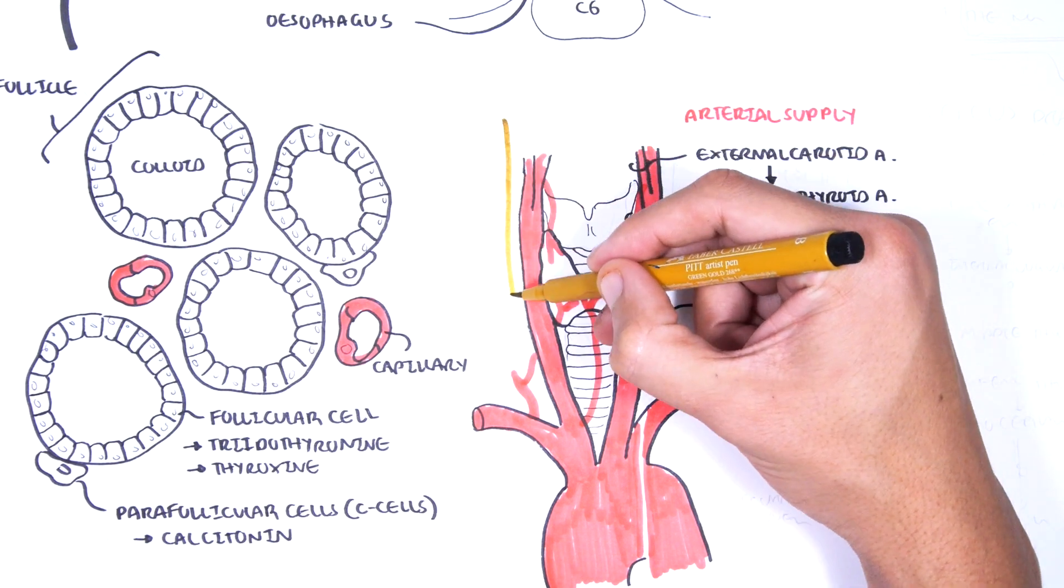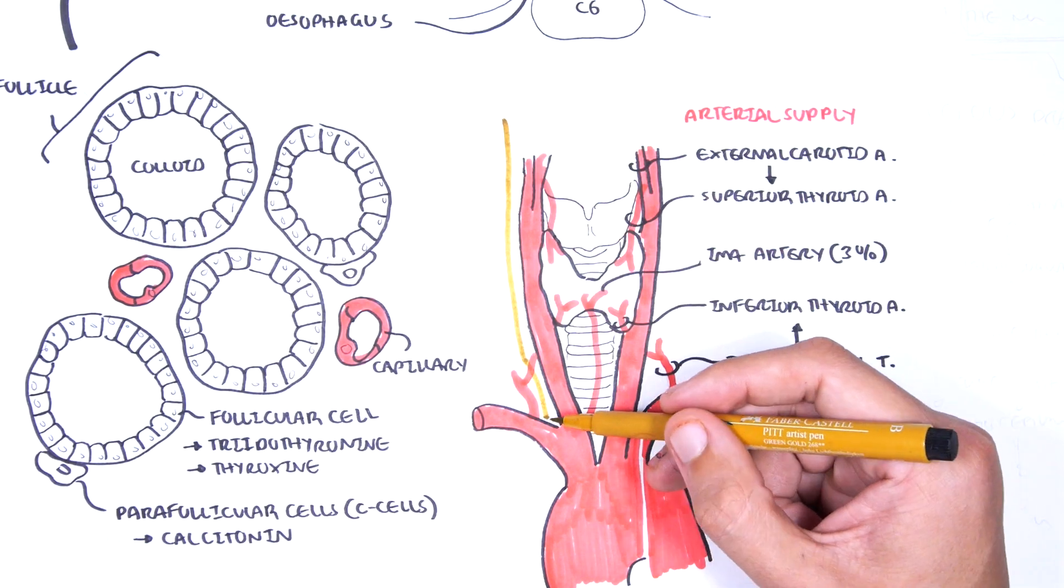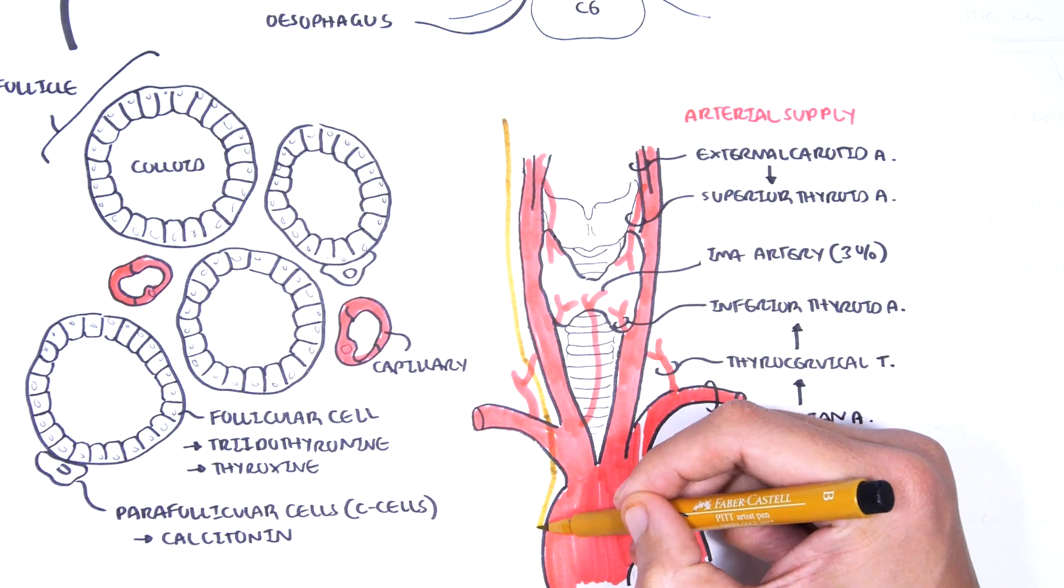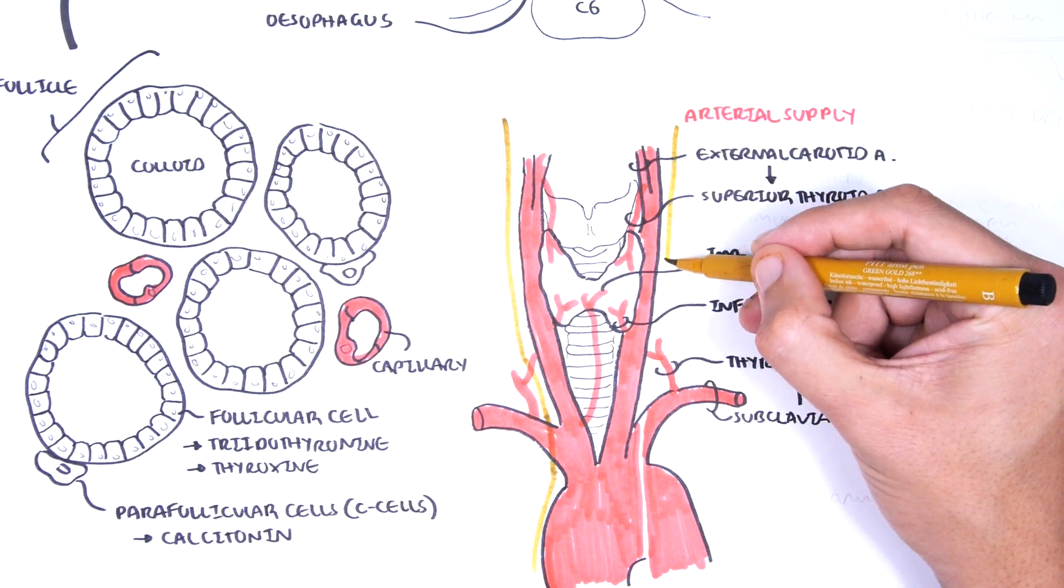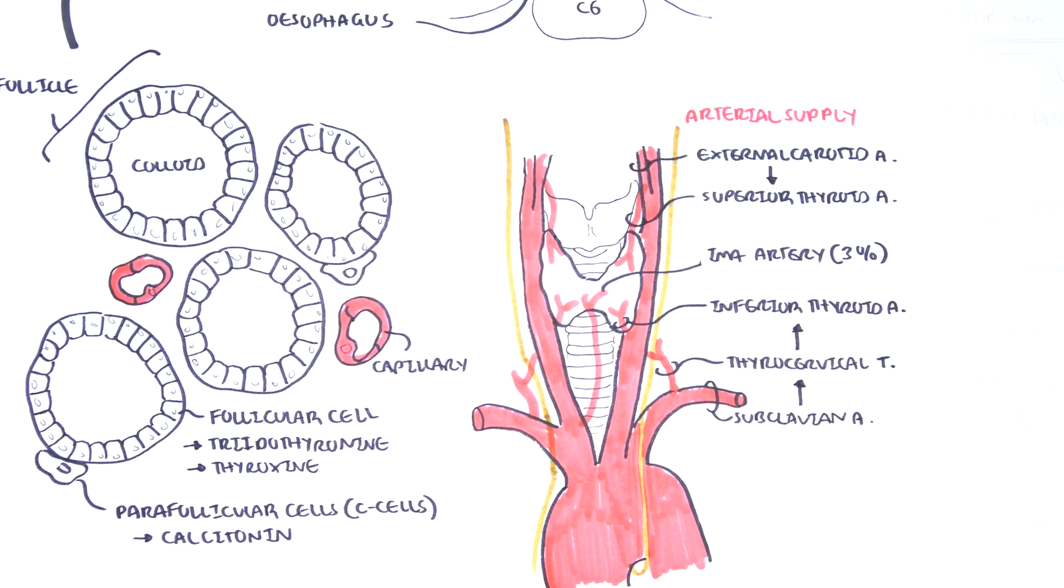Running along the arteries are nerves which supply the laryngeal muscles, the muscles for speech and voice. These nerves are important for the anatomy of the thyroid because of its close proximity to the thyroid gland.